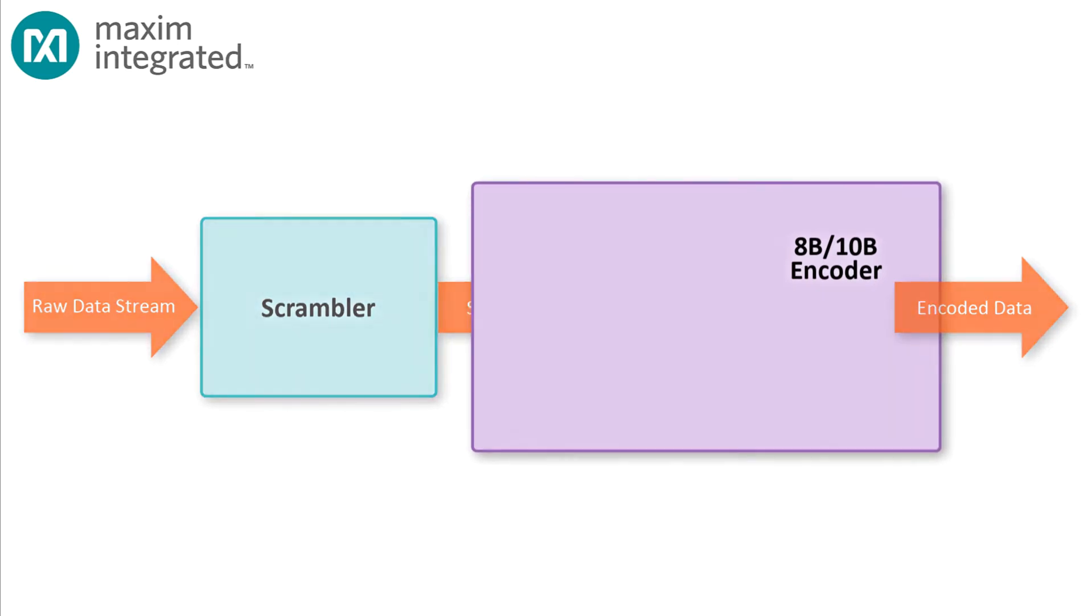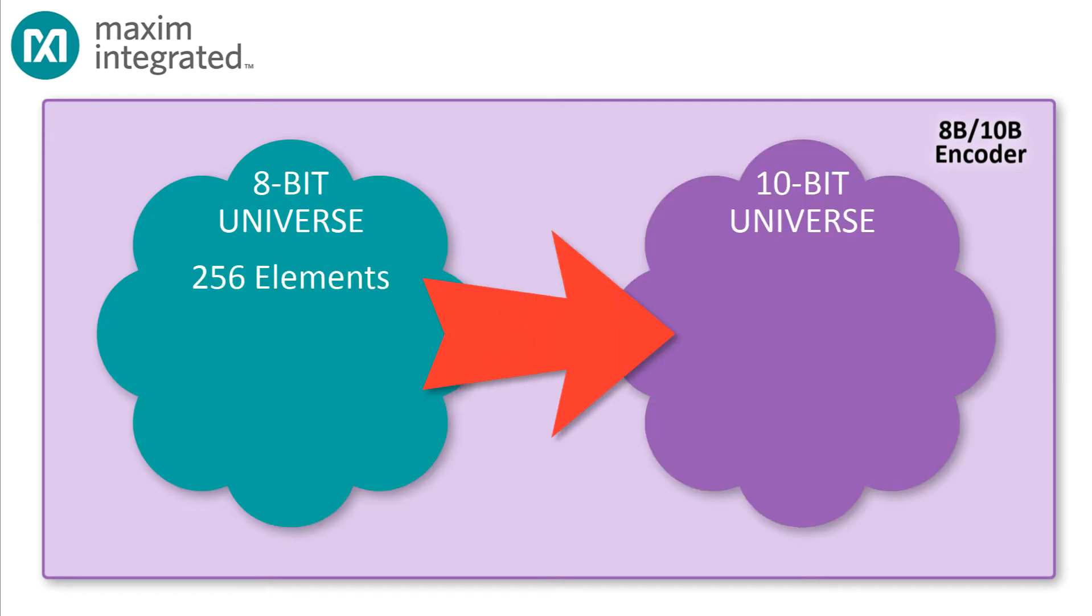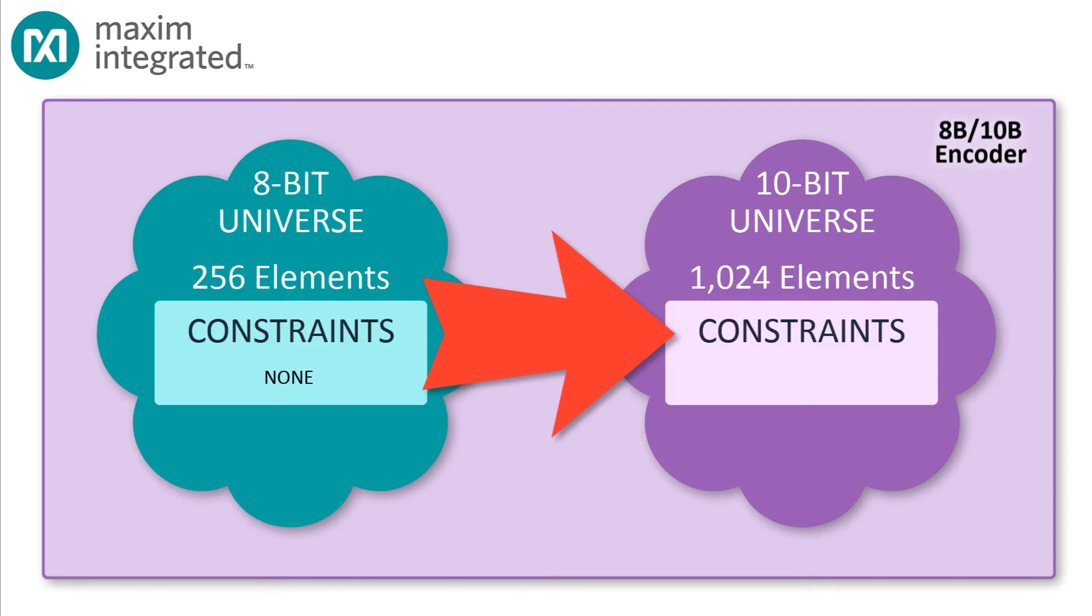That's where 8B-10B encoding comes in. We want to map the 256 possible combinations of 8 bits onto the 1024 possible combinations of 10 bits, such that each mapping has some guaranteed density of signal transitions. And every word has the same number of zero bits as 1 bits, that is, has a disparity of zero. Can it be done?